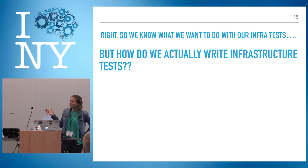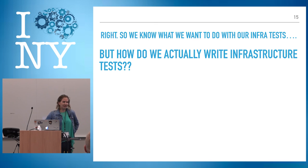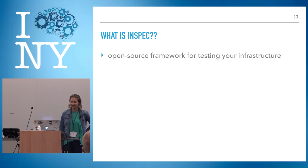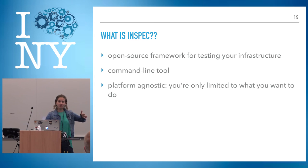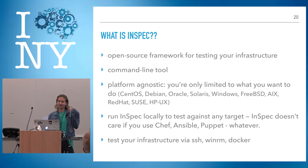We kind of know about infrastructure tests and we like them. So what tooling are you all using right now? ServerSpec and Test Kitchen are kind of the usual answer. There's been some new tooling in the works for the last couple years, and that's InSpec. InSpec is an open source framework for testing your infrastructure. It's a command line tool, platform agnostic — InSpec doesn't care if you're using Chef or Puppet. You can test your infrastructure with SSH, WinRM, or Docker.